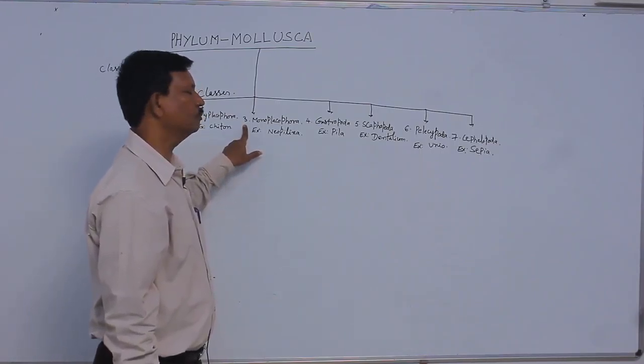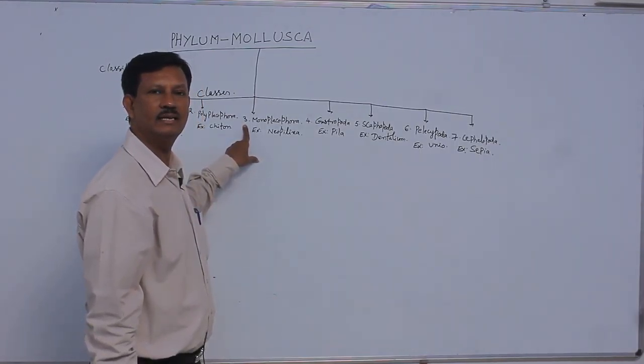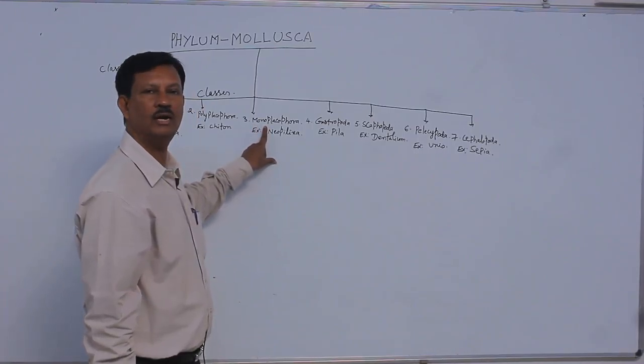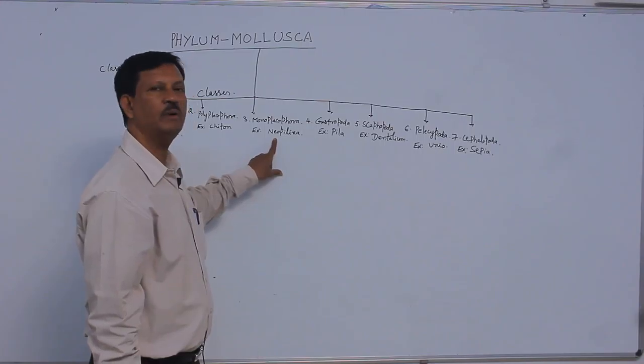Third class, Monopractophora. Mono means Single. Single plate or single shell is present. Hence, they are known as Monopractophora. Example is Neopalita.